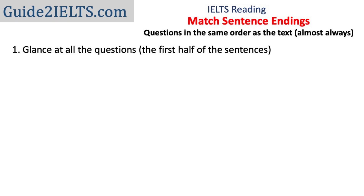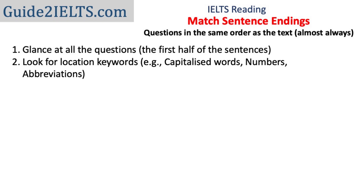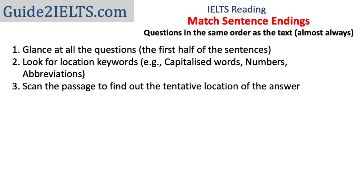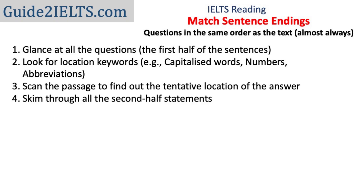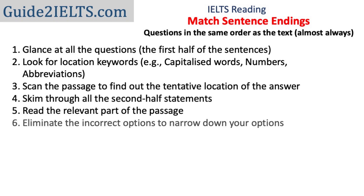To approach this question type, you could read one question, identify its location in the passage, figure out its answer, and move on. However, what I usually do is glance at all the questions first — the first half of the statements — looking for obvious location keywords such as capitalized words. Identify the tentative location in the passage, then skim through all the second half statements. Skimming means reading very quickly without going into details. Then read the relevant part of the passage and identify the probable answer. Sometimes the answers are quite easy to figure out; in other cases, you may need to go back and forth to eliminate incorrect options.